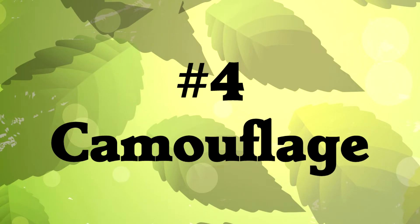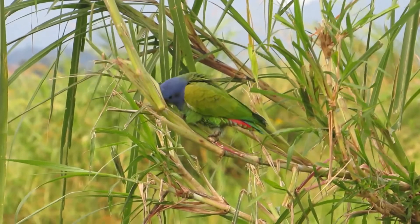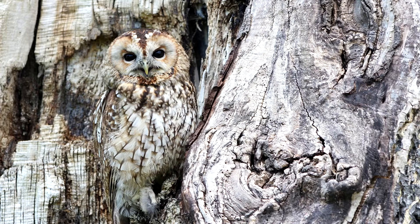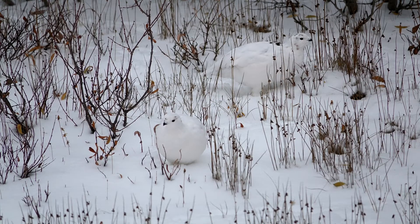Number 4, camouflage. Birds have found some amazing ways to camouflage among their natural environment. Some birds look like stumps or twigs. Some birds look like bark. Some birds look like snow.